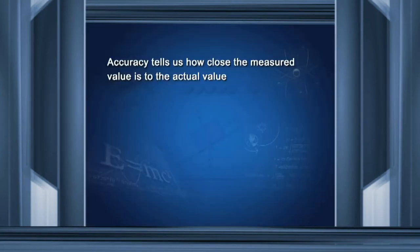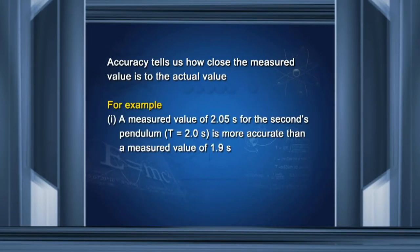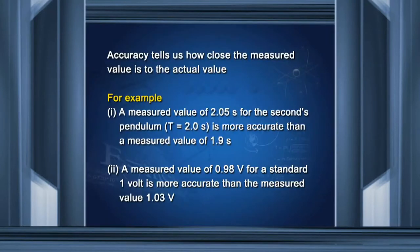What is accuracy? Accuracy tells us how close the measured value is to the actual value. For example, a seconds pendulum has a time period of 2.0 seconds. A measured value of 2.05 seconds is more accurate than a measured value of 1.9 seconds. Similarly, a measured value of 0.98 volt for a standard 1-volt source is more accurate than a measured value of 1.03 volt.